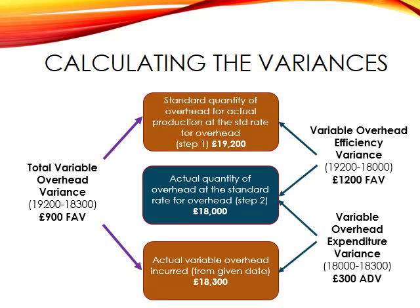The last thing to note is that combining the efficiency and expenditure variances returns us to the total variable overhead variance: £1,200 favourable less £300 adverse equals £900 favourable.